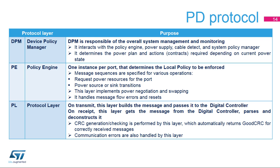Three software layers are defined in the PD specification. Layer 1 is the Device Policy Manager (DPM), in charge of device-level system management and monitoring, determining the power plan and contracts depending on current power state. Layer 2 is the Policy Engine (PE), controlling a single UCPD port; message sequences are defined to request power resources, perform source or sink transitions, implement power negotiation and swapping, and handle message flow errors and reset. Layer 3 is the Protocol Layer (PL), in charge of constructing and deconstructing PD messages. This layer automatically returns good CRC when a message is correctly received and handles transmission errors such as timeouts and retries.